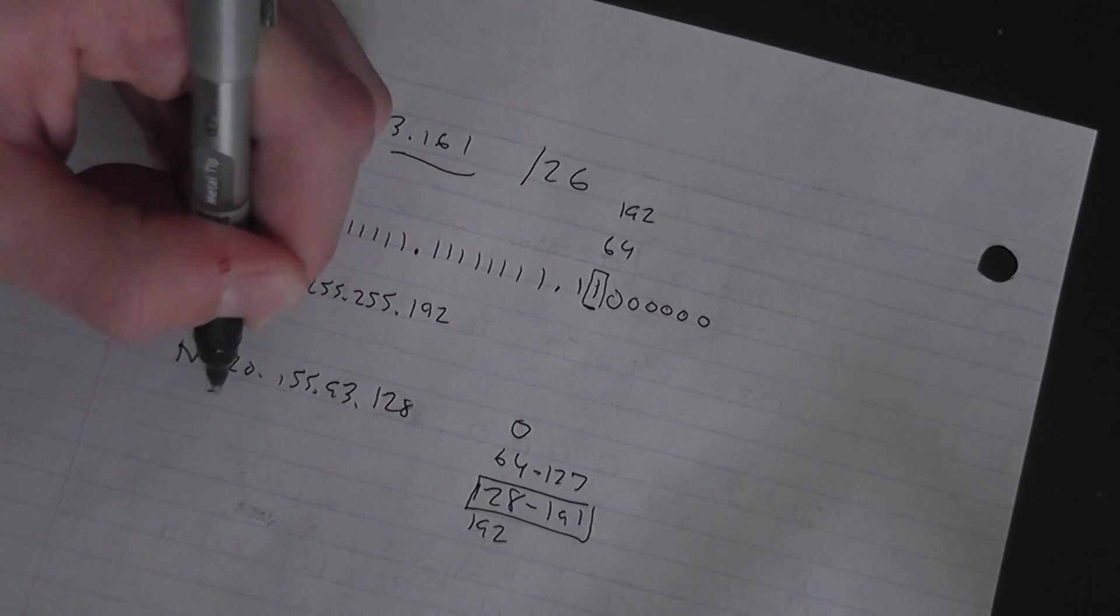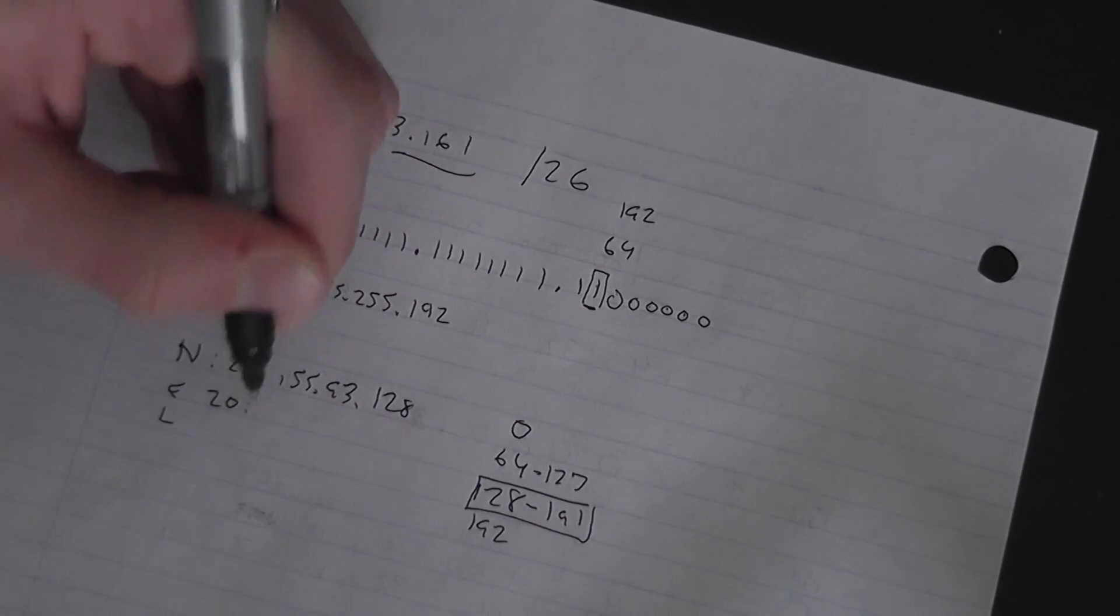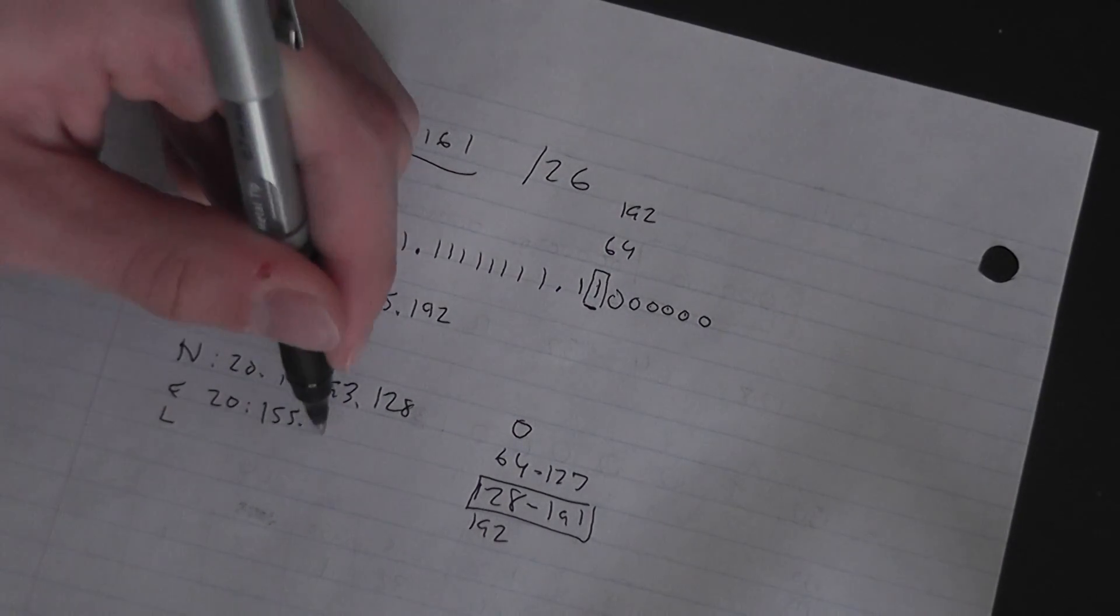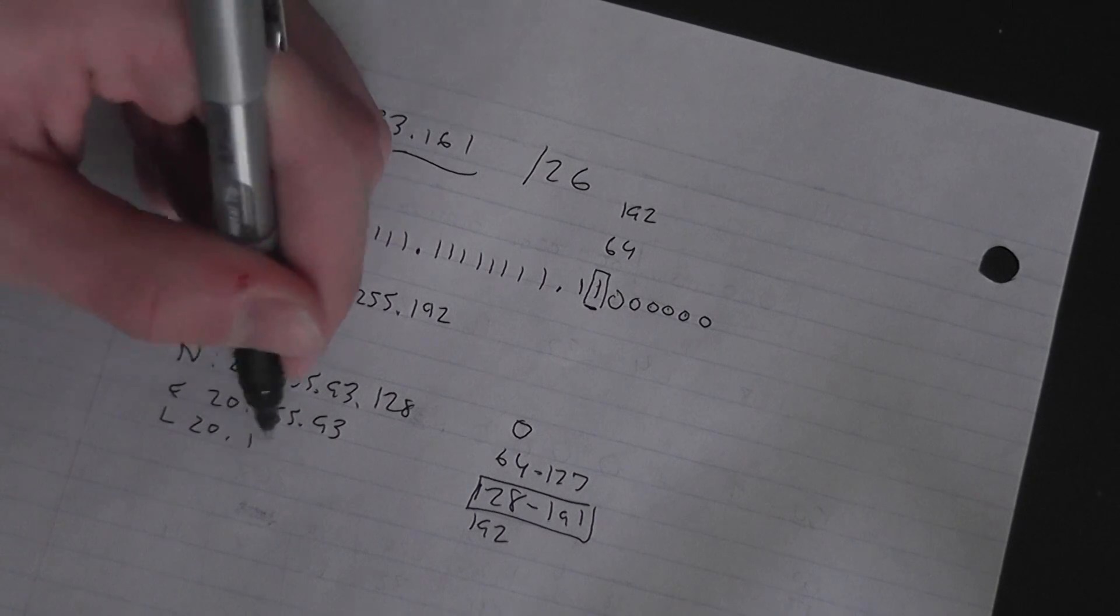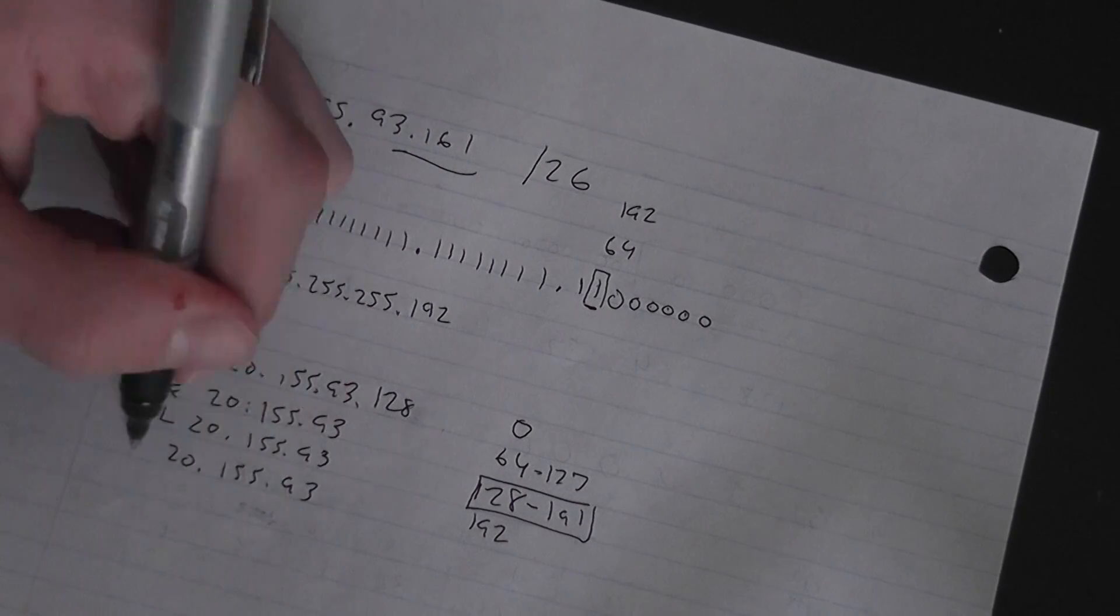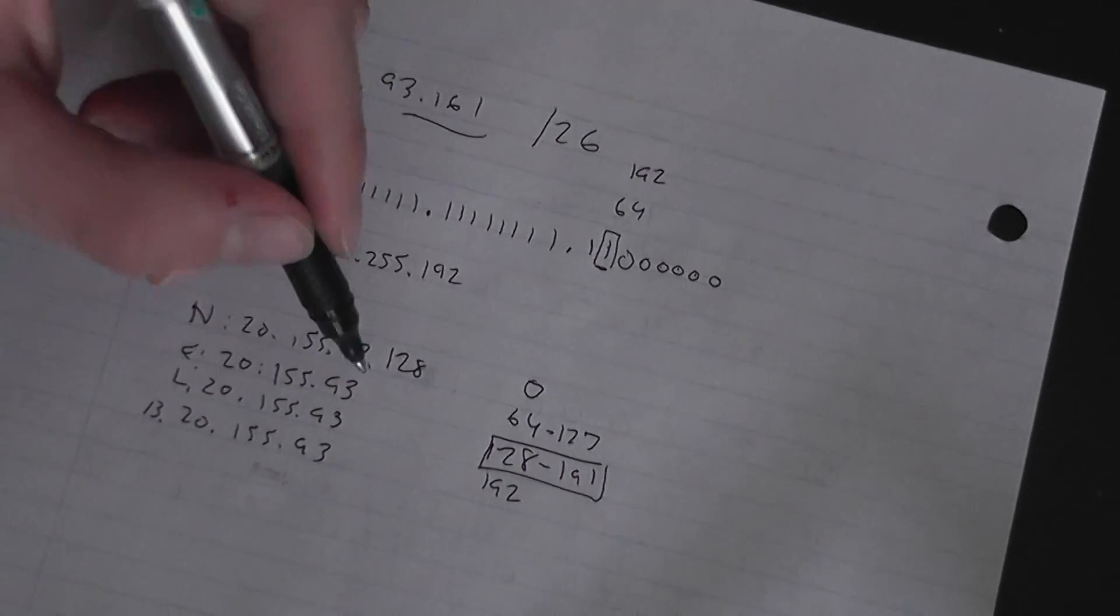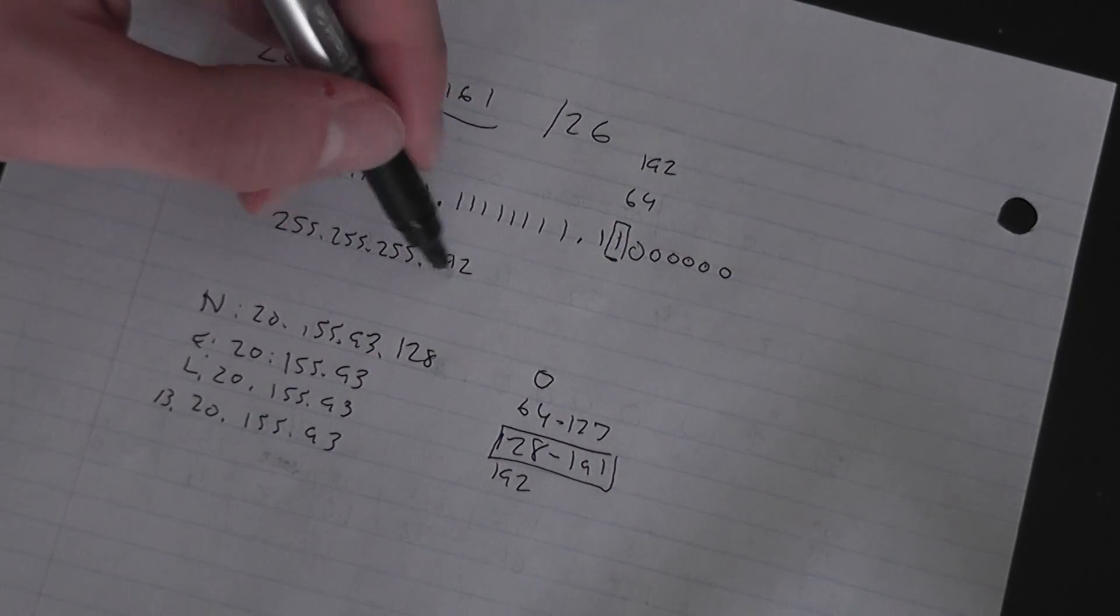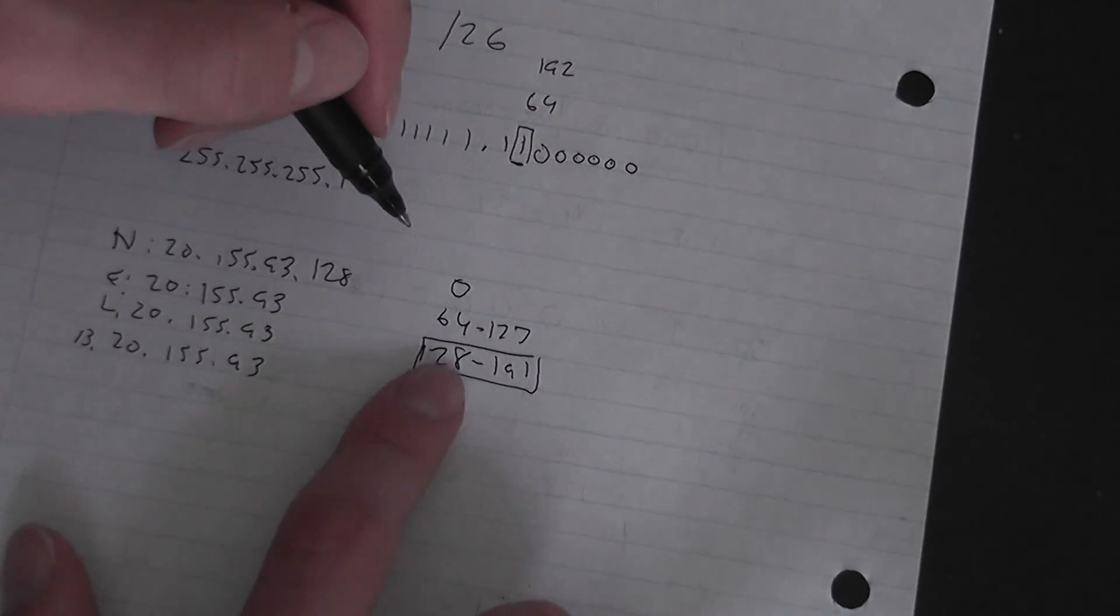So your network is 20.155.93.128. We're looking at the fourth octet because the fourth octet is the weird one.